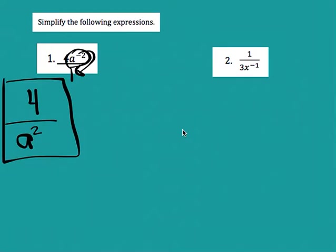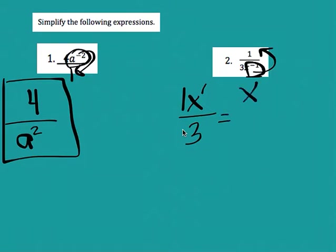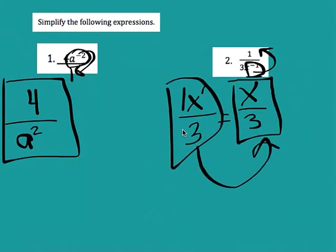For number 2, I notice X to the negative 1 on the bottom. X is the only thing with the negative exponent, so that's what flips up to the top. I have 1·X to the 1 divided by 3. Notice I didn't flip the 3 — I just flipped the X because that's what has the negative exponent. 1·X to the 1 is just X, divided by 3. So the answer is X over 3.